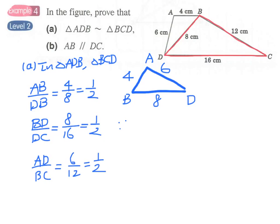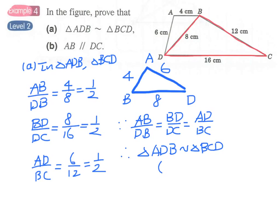And therefore we can conclude that all the ratios of sides are equal. Therefore triangle ADB is similar to BCD. And the reason is 3 sides proportional.